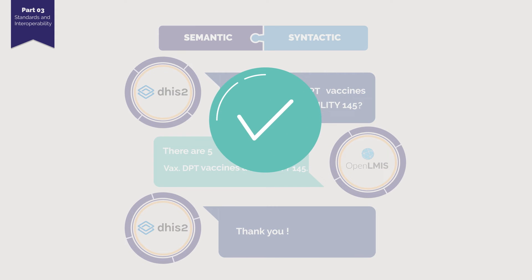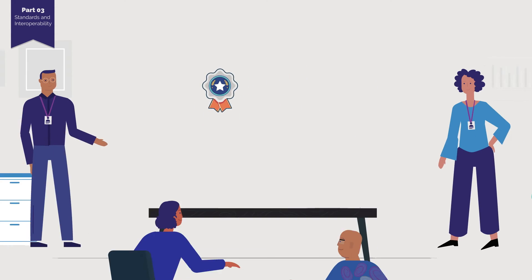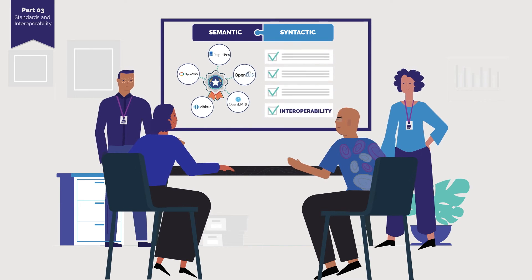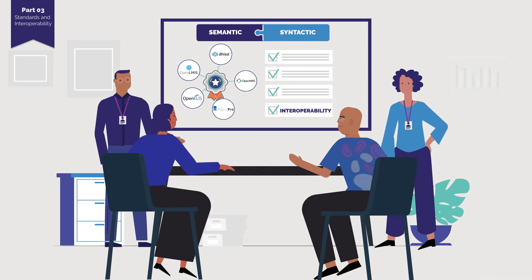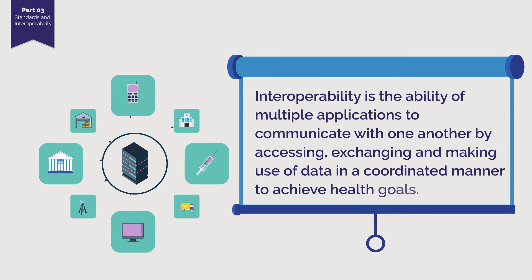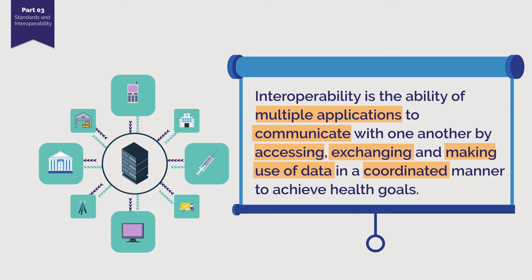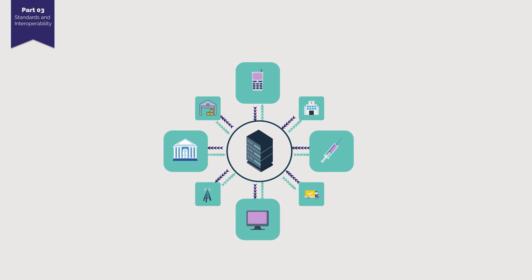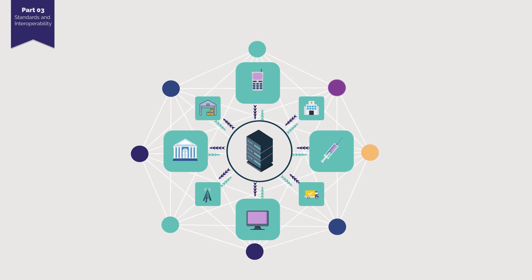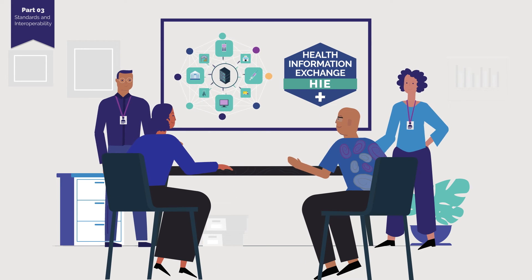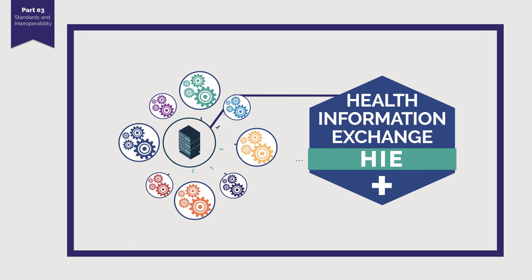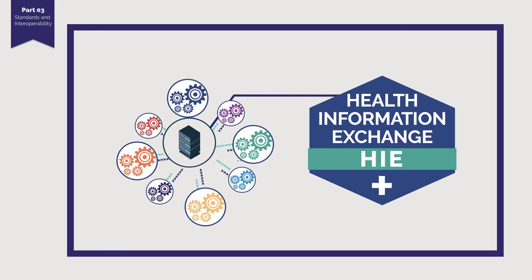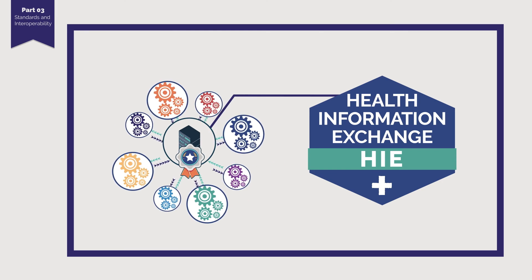Now that Isaac and Lucy understand standards, they must determine all the different semantic and syntactic standards they would like to adopt in Onessa. The software development team explains that investing in standards will make it easier and more cost efficient to enable interoperability between all their digital health applications. Interoperability is the ability of multiple applications to communicate with one another by accessing, exchanging and making use of data in a coordinated manner to achieve health goals. To ensure true interoperability at a large scale between all their systems, Lucy and Isaac learn that they need to invest in a component known as a Health Information Exchange. A Health Information Exchange, or HIE, is part of a country's enterprise architecture that connects multiple applications and allows them to move data between one another using standards bundled together to provide implementation guidance for the software developers.